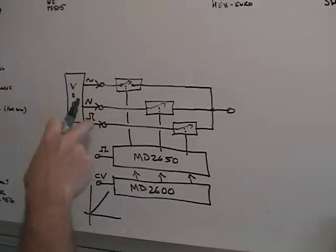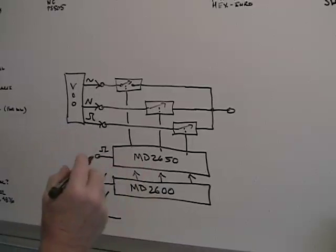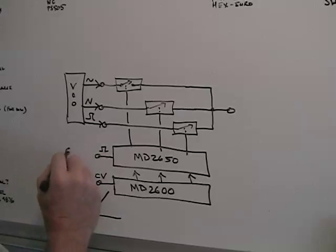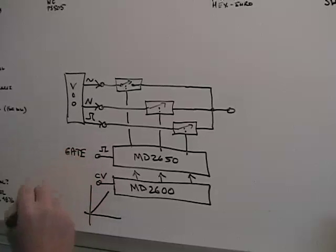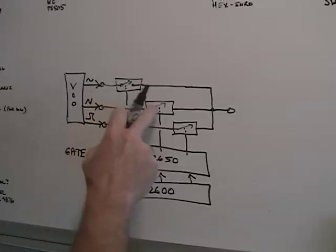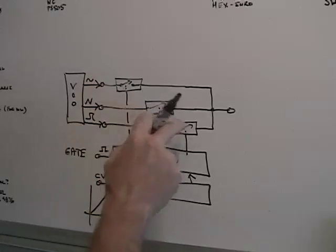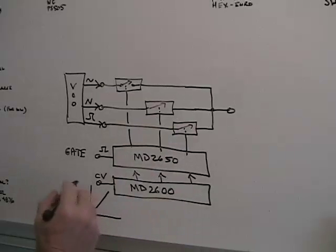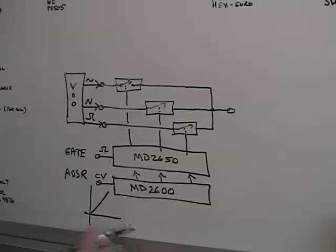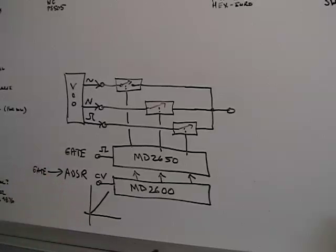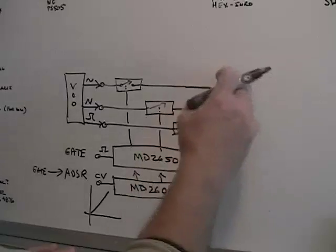One obvious thing you can do is hook up three waveforms from your VCO, and then hook this up to your system gate, say from your midiverter. So every time you hit a key on your keyboard, the gate is going to toggle the waveforms in succession. In the scanner, you would hook this up to your ADSR, which would be gated by your system gate, so that over the course of your ADSR you would get different waveforms.